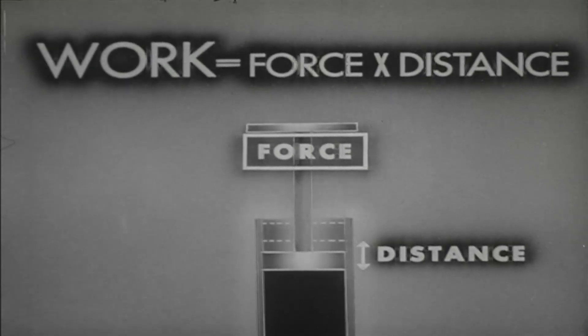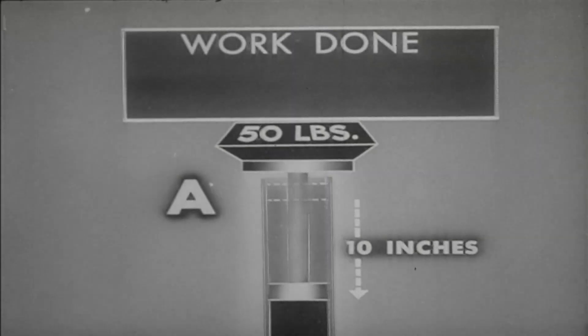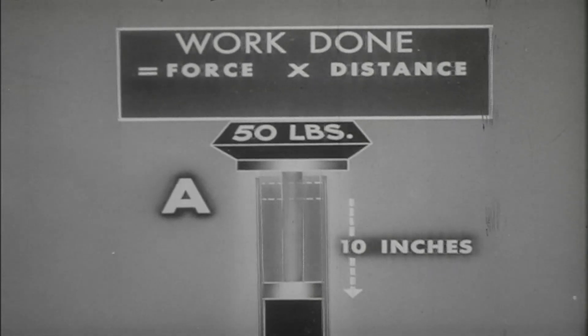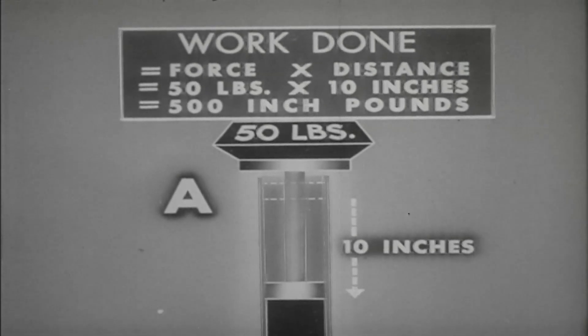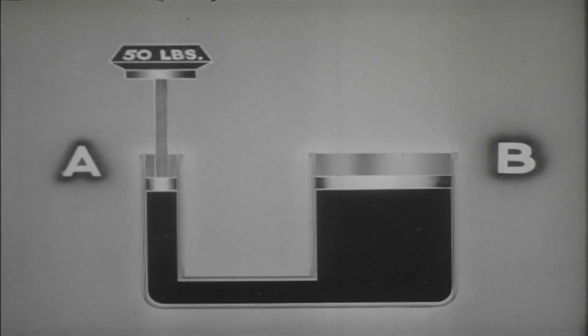We shall proceed now to investigate how work is done by means of a hydraulic system. Let us consider a specific example. We shall find first exactly how much work is done by the input piston as it moves to the bottom of its stroke. Let us apply a weight of 50 pounds to the input piston and assume that its stroke is 10 inches. When a force moves through a distance, work equal to the force times the distance is done. The work done by the input piston then is 50 pounds times 10 inches — 500 inch pounds. This work done by the input piston is called the work input, or work put into the system.